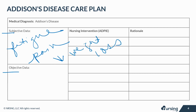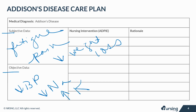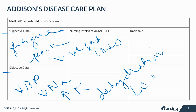Objective or measurable data includes decreased blood pressure, electrolyte imbalance including decreased sodium and increased potassium, severe vomiting and diarrhea, dehydration, and loss of consciousness.